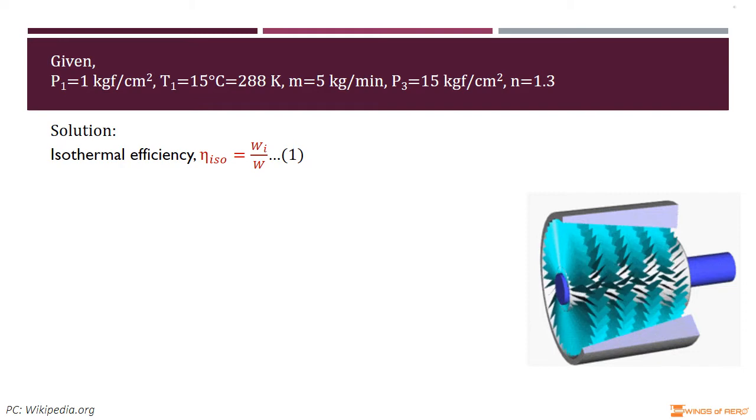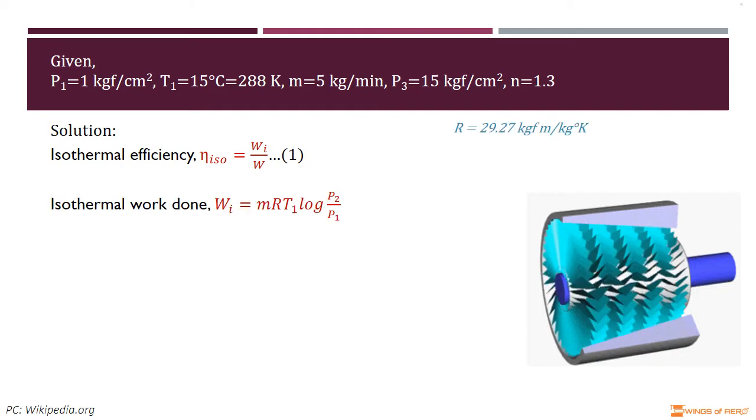First, find isothermal work done. An isothermal process is a change of a system in which the temperature remains constant, and for an isothermal process, PV = constant. Then work done is given by W_I = ṁRT₁ log(P₂/P₁).